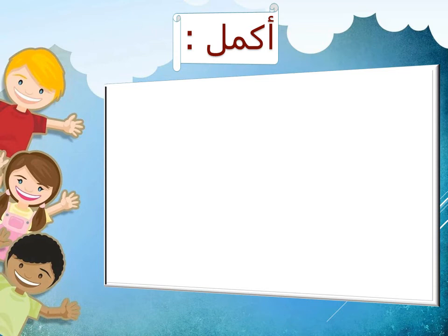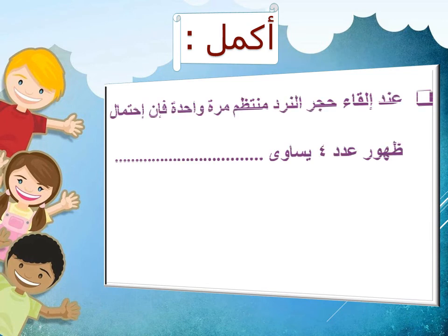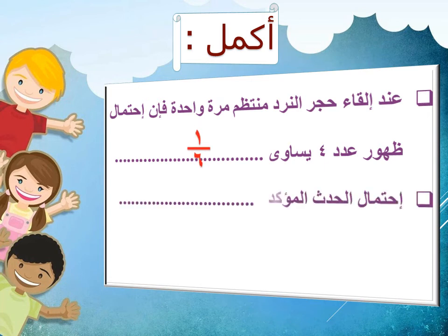سؤال أكمل: عند إلقاء حجر نرد منتظم مرة واحدة، فإن احتمال ظهور عدد 4 يساوي 1/6. واحتمال الحدث المؤكد يساوي 1.